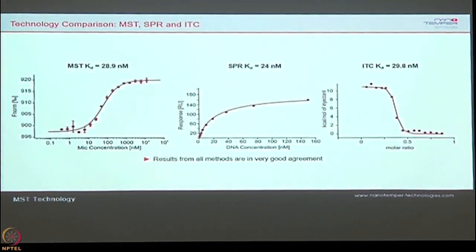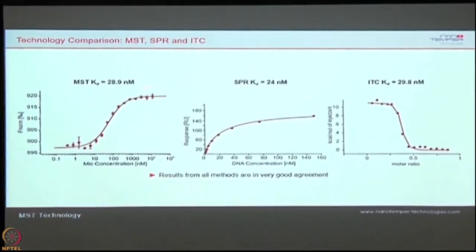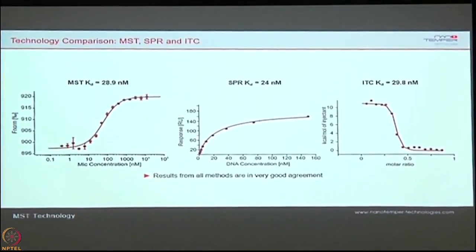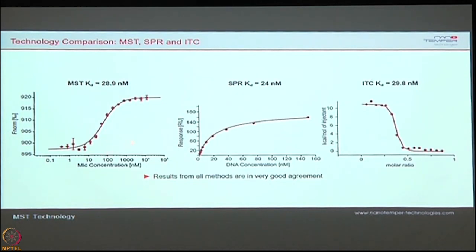This technique is typically comparable to SPR and ITC — Isothermal Titration Calorimetry. In the chemistry field, people measure heat change to determine binding affinity. The biggest advantage over these techniques: we did a protein-DNA interaction study and got almost the same KD across all three techniques — MST gave 29 nanomolar, SPR gave 24 nanomolar, and ITC gave 30 nanomolar. So whatever binding affinity you determine by MST is very similar to ITC and SPR assays.